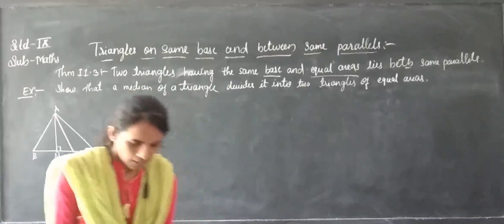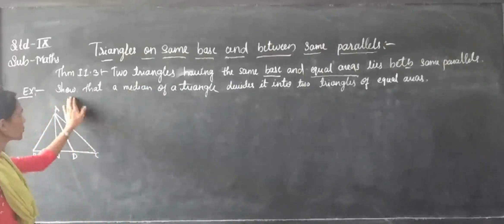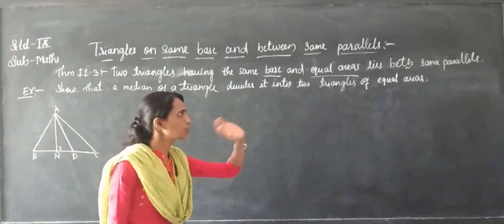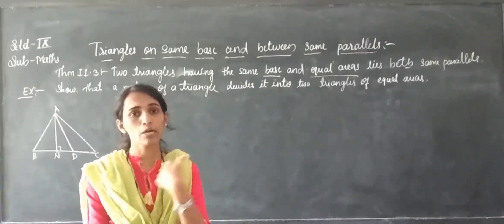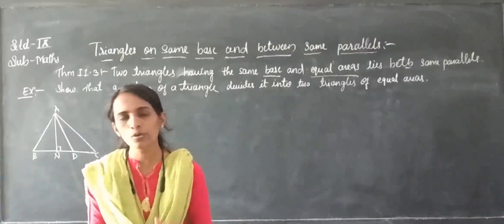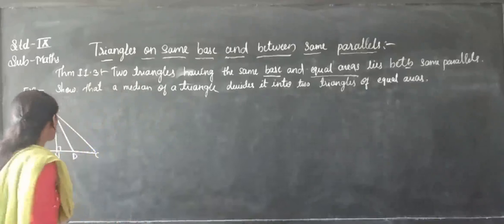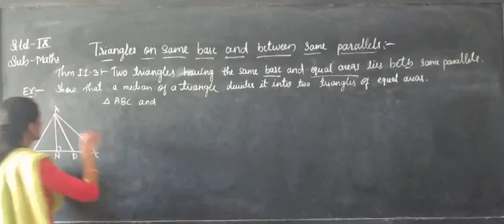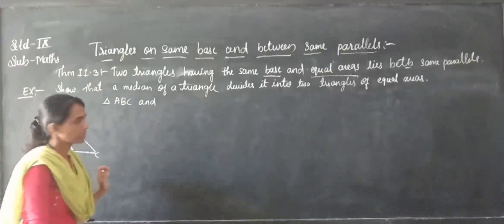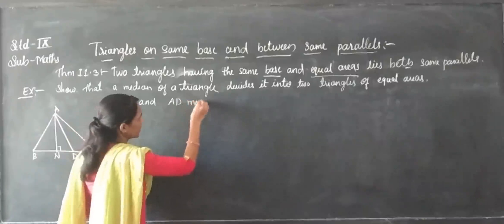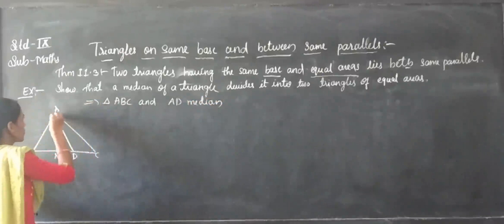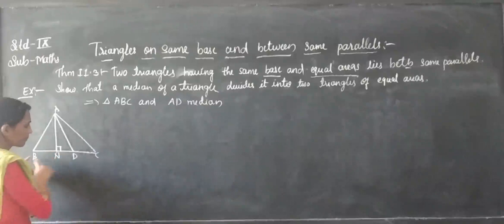That's theorem 11.3. So depending on the theorem, the corollary should be told. What is the interpretation? The median of a triangle divides it into two equal triangles. The median is already on the same base. The triangle is in the same base. But we have to prove that. So, let's consider triangle ABC, where AD is the median of triangle ABC.